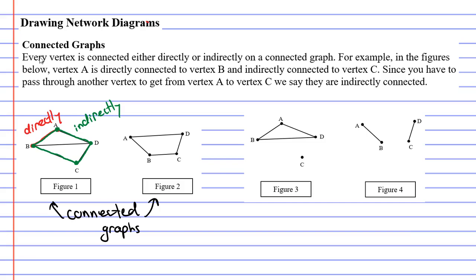Now looking at figures 3 and 4, these are not connected graphs. The best way to see this is to look at vertex A and vertex C in each graph. There is no way that you can get to vertex C from vertex A in either figure 3 or figure 4.